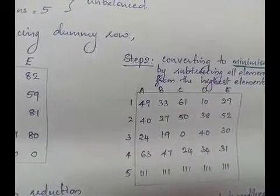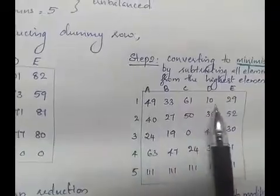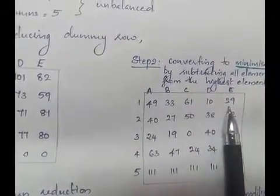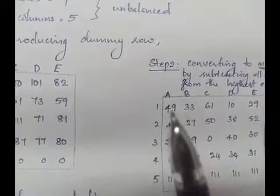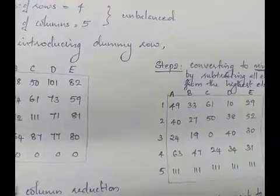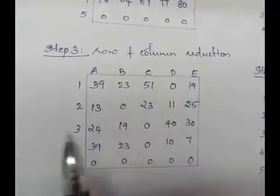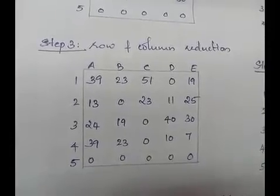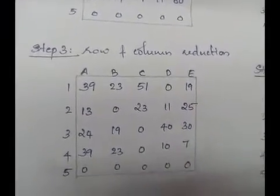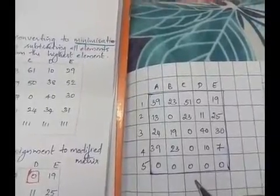The first step is row reduction and column reduction. We subtract the minimum elements row-wise and then column-wise to get the reduced matrix. After row and column reduction, we check whether there is a zero in each row and column, then proceed to make the assignments.